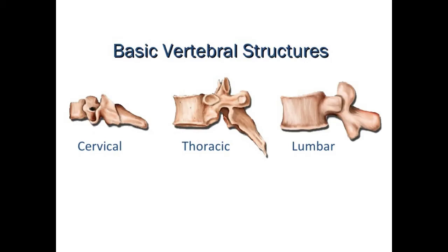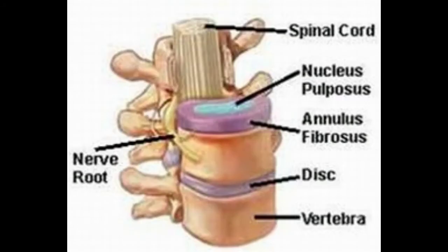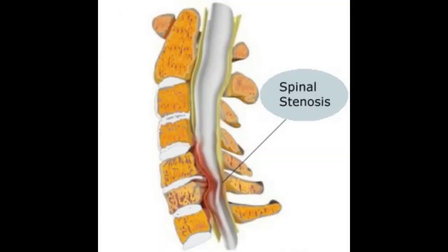Each of the vertebrae forming the spinal column have several articulating facets, which are also used for muscle attachment. There is also a hole at the center through which the spinal cord passes. The spinal discs consist of the nucleus pulposus and the annulus fibrosis.